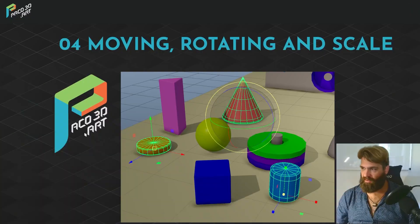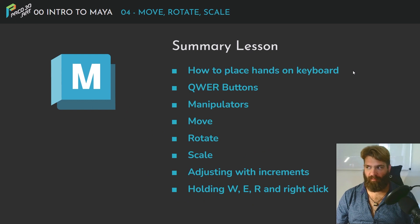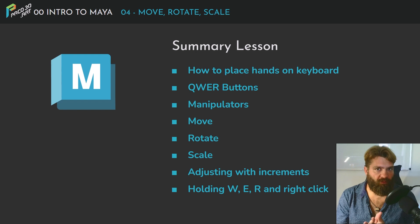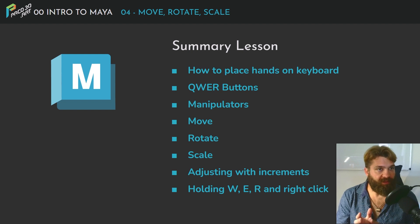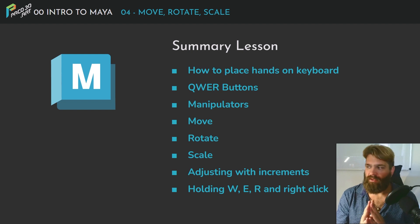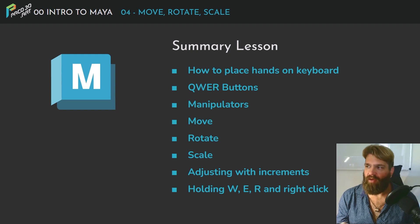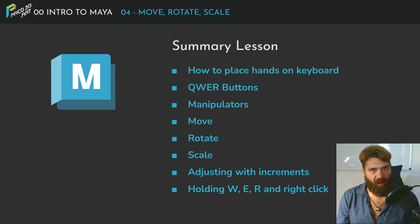We are going to start by learning how to do placement with the keyboard. I am doing this out of experience — I've had a lot of students in the past who are very comfortable using iPads or phones but haven't used the computer as much. So I am going to talk a little bit about where to place the hand on the keyboard and the mouse, and then we are going to talk about the shortcuts using Q, W, E, and R.